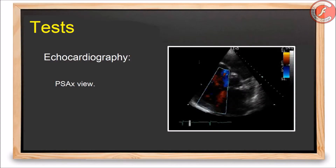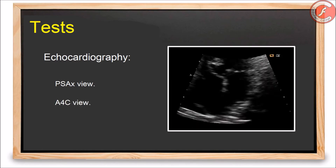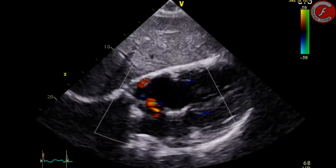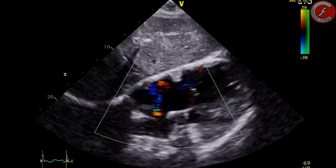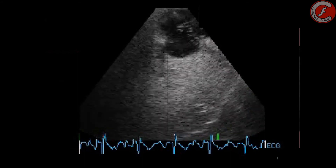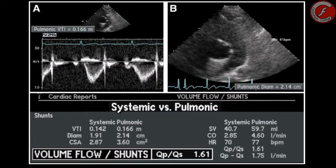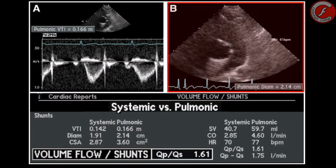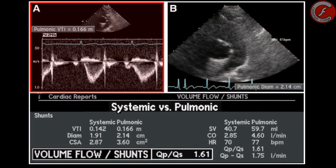Transthoracic echocardiography is useful in diagnosis and assessment of atrial septal defects. Three main views are used: parasternal short axis at the level of the aortic valve, apical four-chamber view, and subcostal four-chamber view. Color flow Doppler can confirm the presence, size, and direction of an atrial shunt. An intravenous agitated saline injection can detect inter-atrial shunting. The QP:QS ratio measures hemodynamic impact, calculated by dividing flow across the pulmonary valve by flow across the aortic valve, where flow equals the cross-sectional area of the outflow tract multiplied by the time-velocity integral.